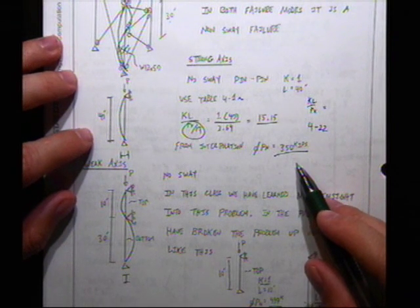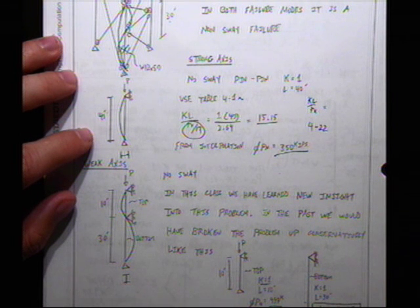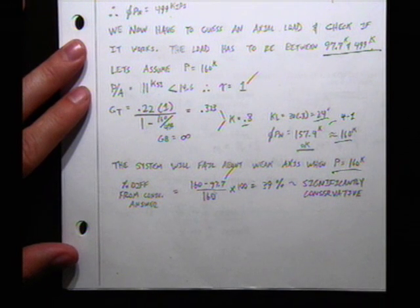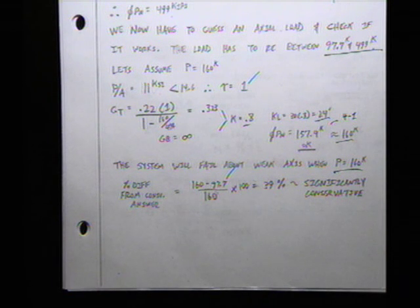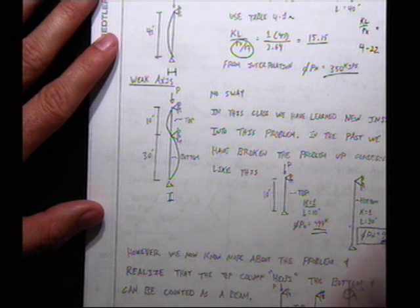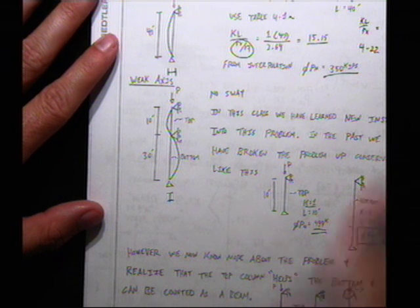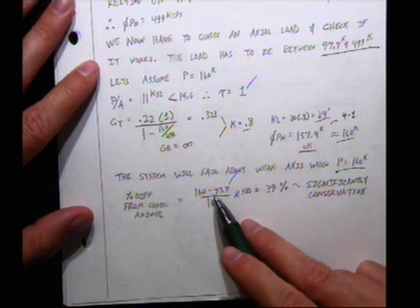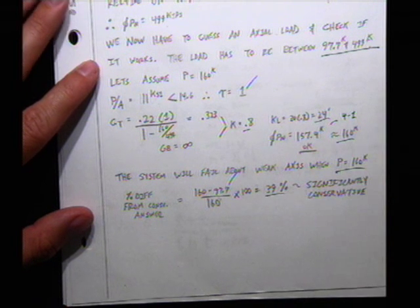Comparing old and new methods: if we had just assumed a pin-pin column at the bottom, we'd have gotten 97.7 kips — conservative but nothing wrong with it. With the restraining member approach we get 160 kips. That's (160 minus 97.7) divided by 160 times 100, roughly a 39–40% increase in capacity by doing just a little extra math.